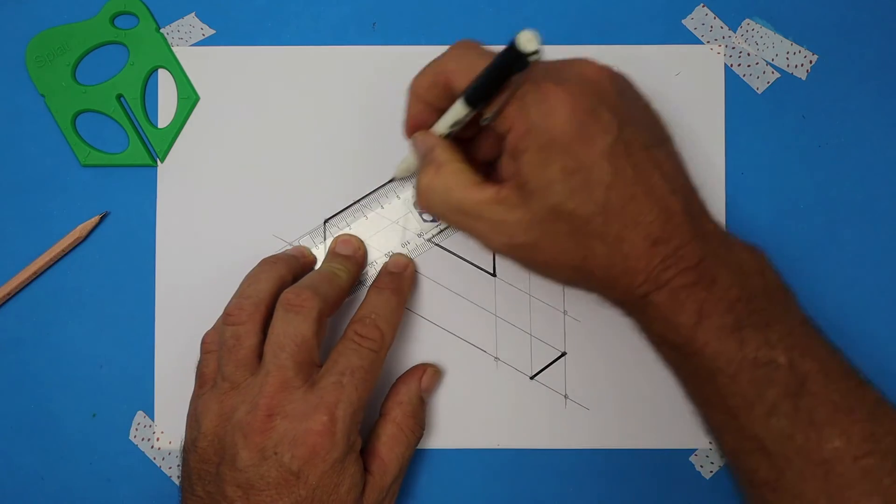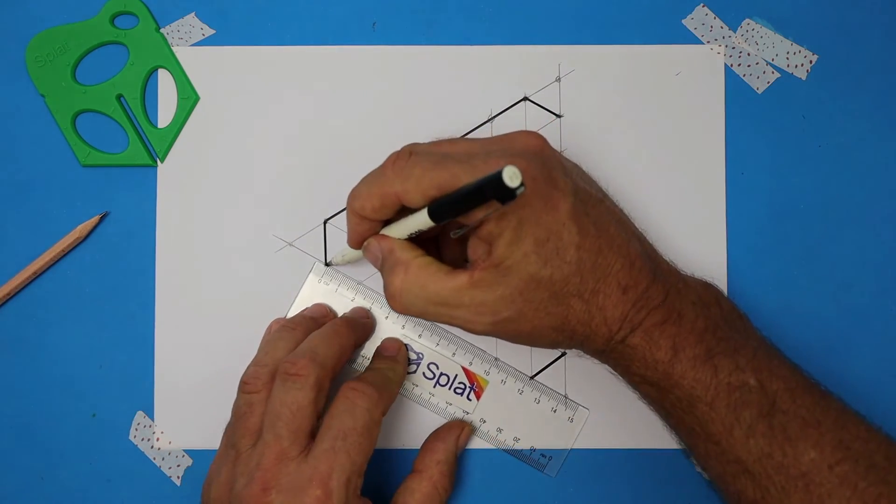Good. Now right around the outside, let's darken in that line. We're almost there.